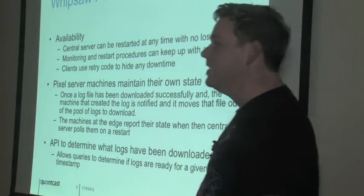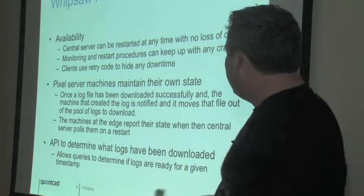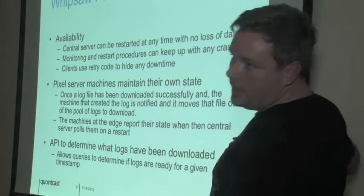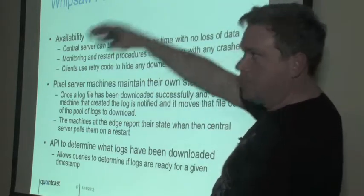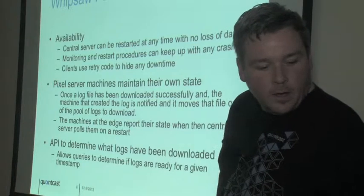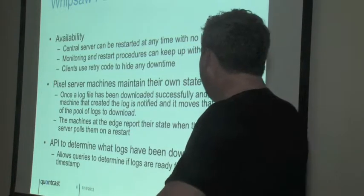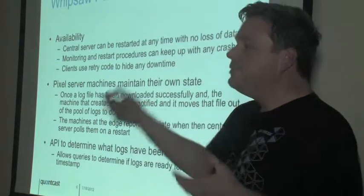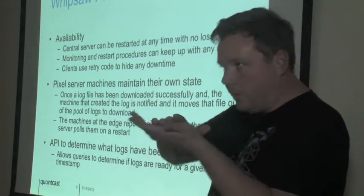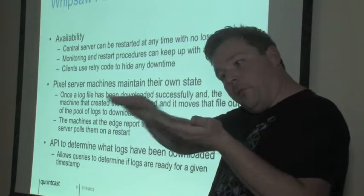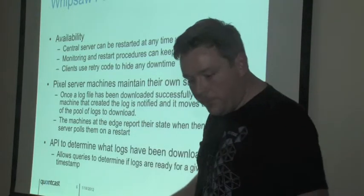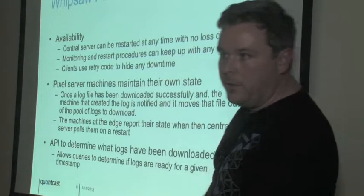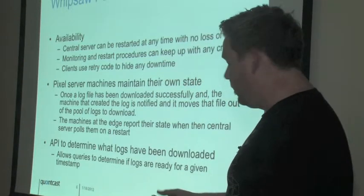This makes it really simple because the files on these machines are on disk, so there's no lossiness. The central system keeps state in memory and can just go back and ask them. So anybody can go down at any time without losing data. When there's a restart of the central server, we pull back to every edge machine and rebuild that internal state. We built this API so client jobs can ask: has every single pixel received before this time already been downloaded to our distributed file system? It's a simple zero-or-one response, but ends up being quite useful.